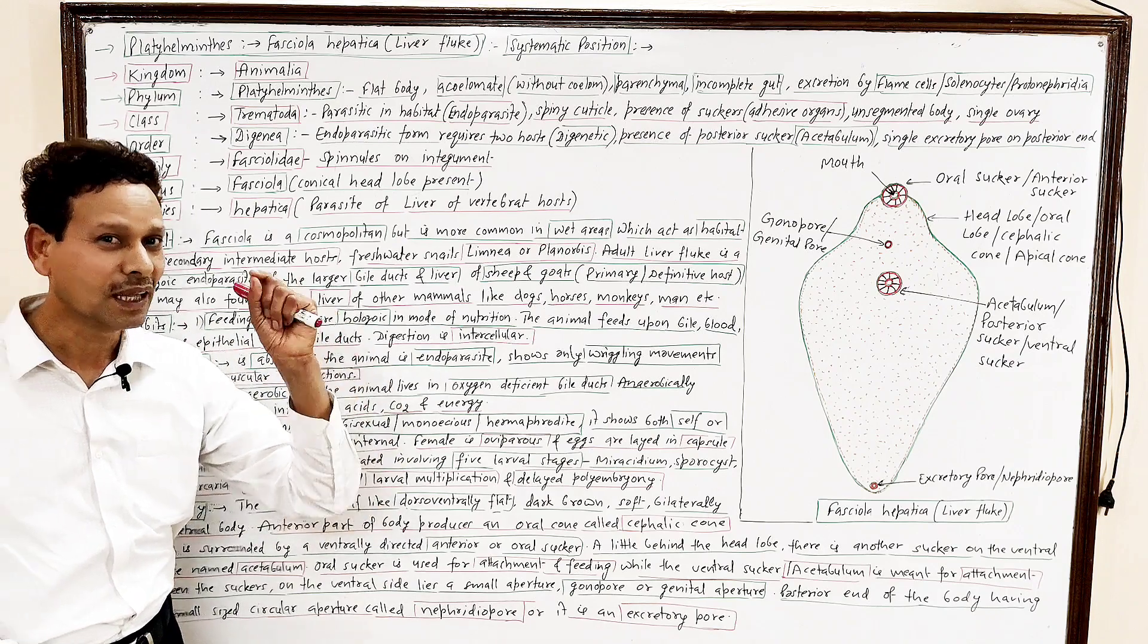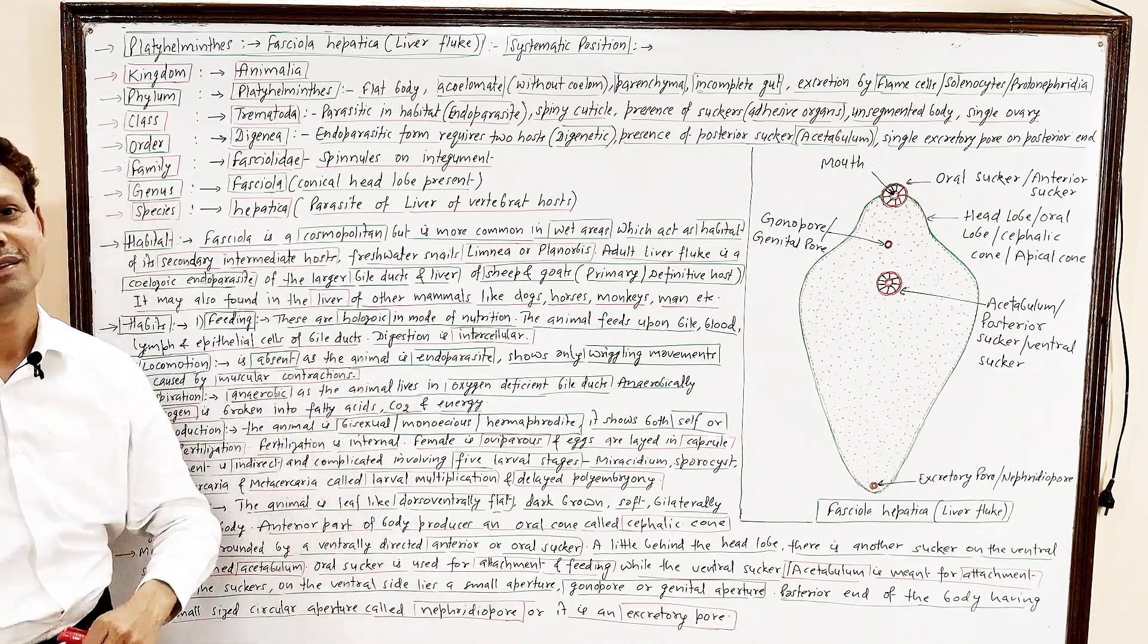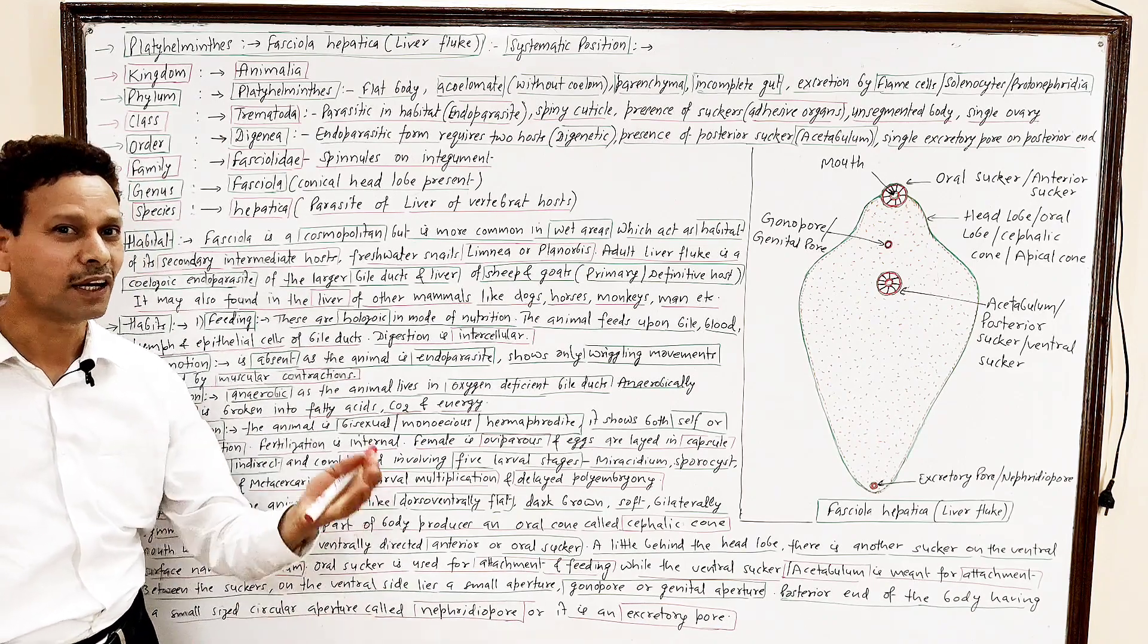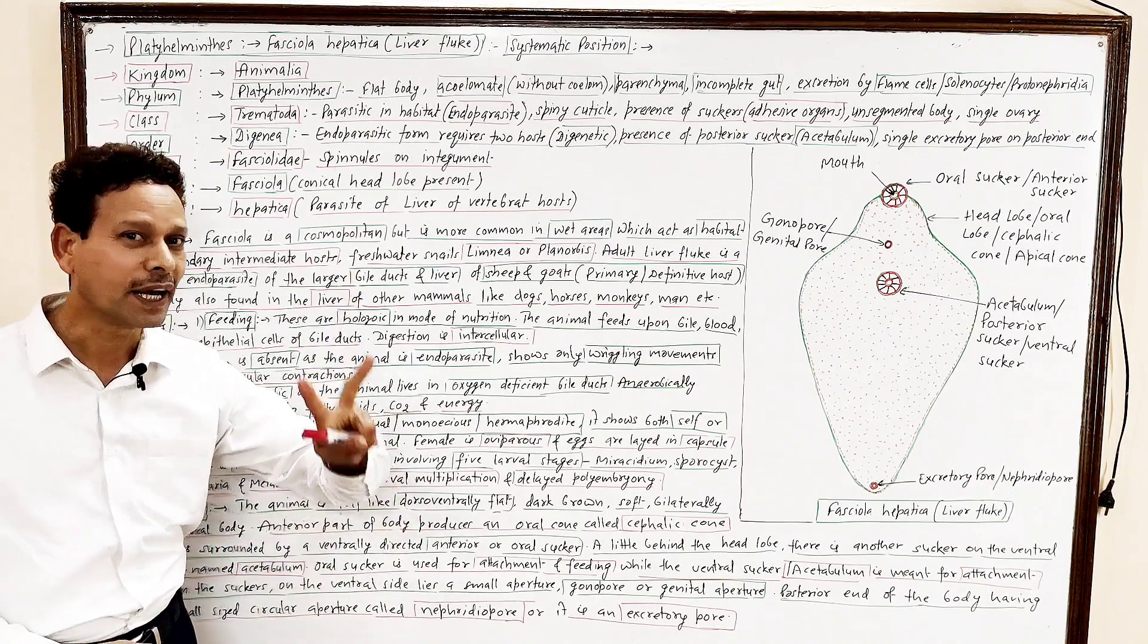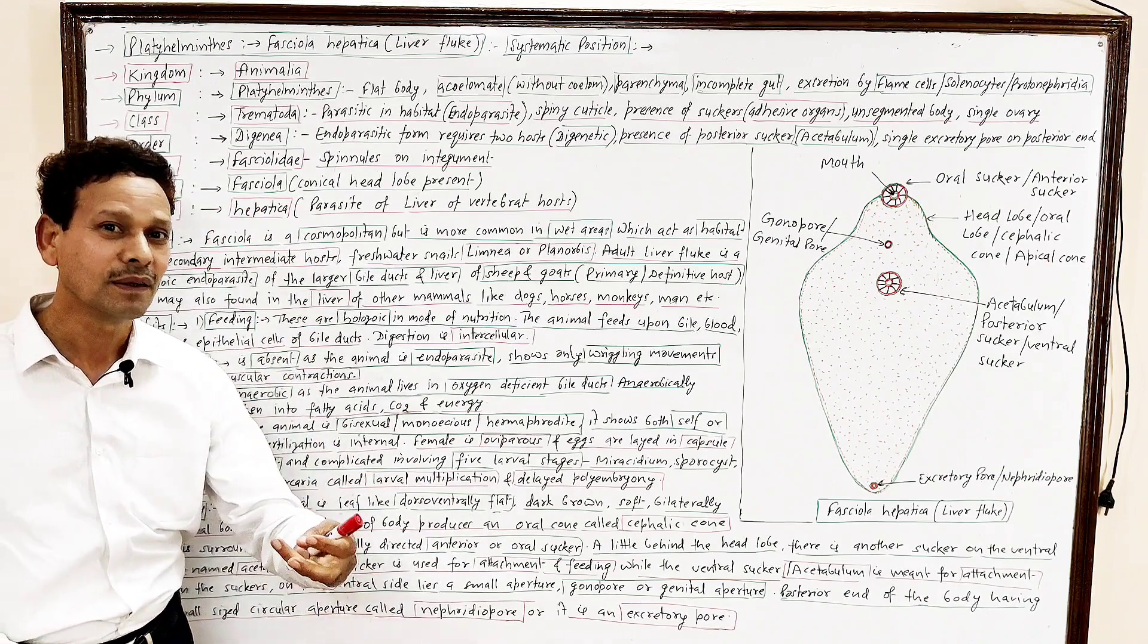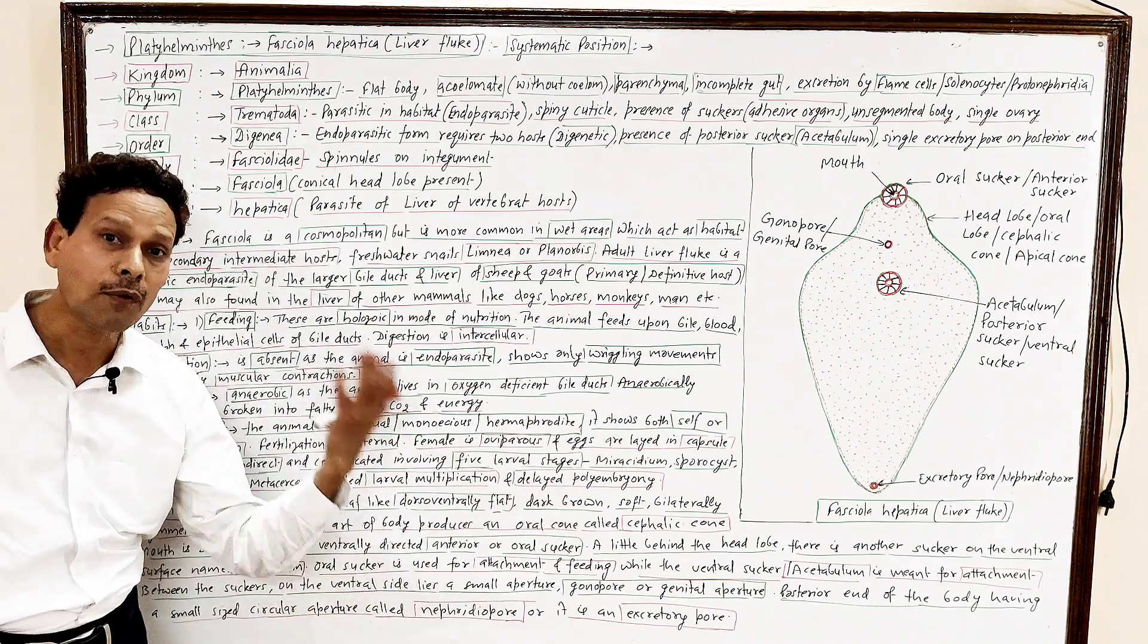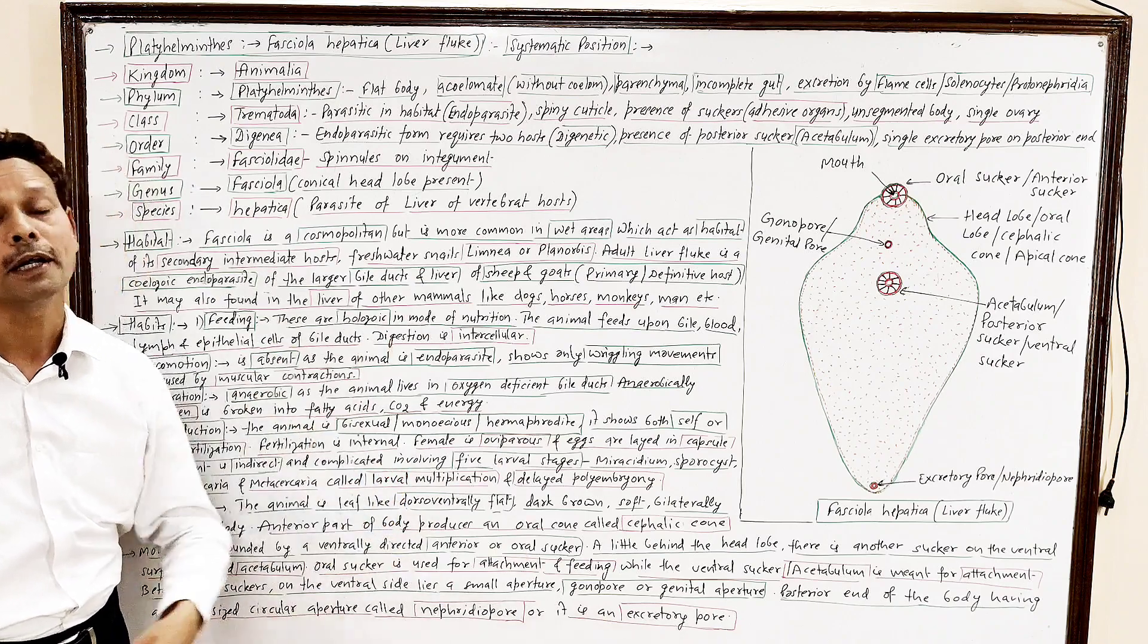Note down. The larval form, particularly the Redia and the Sporocyst, and the Sporocyst, they undergo parthenogenesis. It means in Redia and Sporocyst, the germ cells are present, and the germ cells give rise another larva, larva, without any gametic fusion, without any fusion of cells. These larva undergo multiplication.